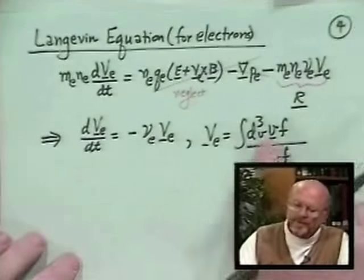So what collisions do is relax the flow velocity of a species toward zero — or really toward the flow velocity of the species it's colliding with. In an electron-ion plasma, Coulomb collisions drive both species to flow at the same velocity, unless additional forces like an electric field prevent that — which leads to electrical resistivity.